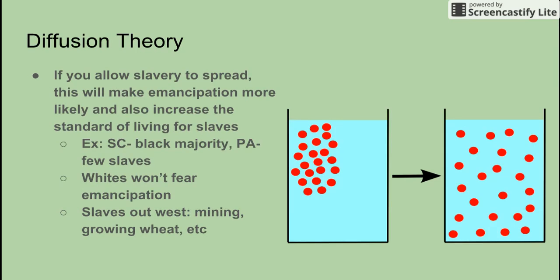We also have the diffusion theory. You know diffusion from science class — it's spread out over more space. The idea is that if you allow slavery to spread, this will make emancipation...